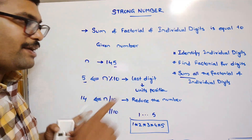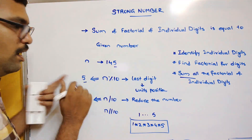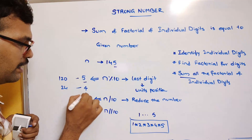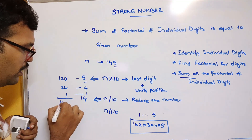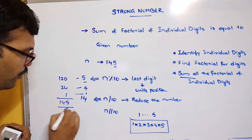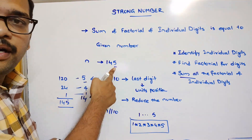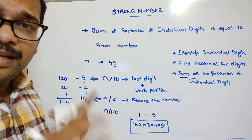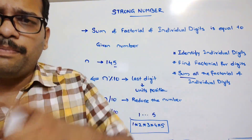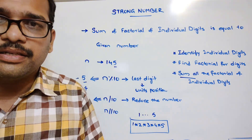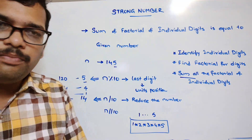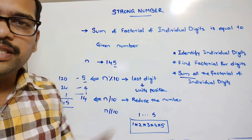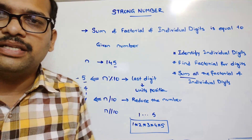After computing each factorial, sum all the values. For example, 5 factorial is 120; in the second iteration 4 factorial is 24; in the third iteration 1 factorial is 1. The total sum is 145, which equals the given number. This is the complete logic to determine whether a number is a strong number or not.